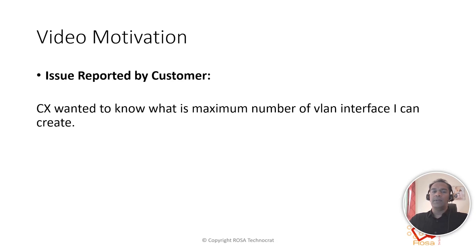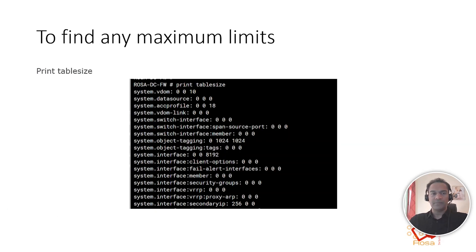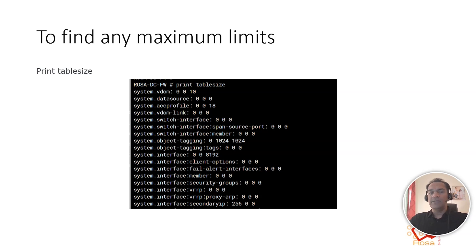For example, how many maximum VLAN interfaces you can configure, how many address objects, how many policies, how many VIP addresses, how many anti-spam profiles, how many security profiles — basically, to find out the maximum configuration limits. It's not about capability limits like bandwidth or traffic handling; it's about the configuration limits on the FortiGate.